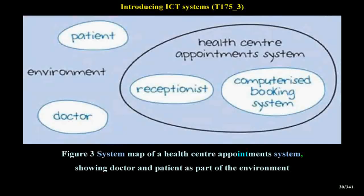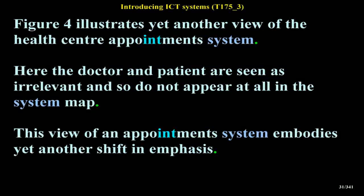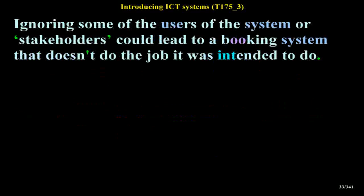Figure 4 illustrates yet another view of the Health Center Appointment System. Here the doctor and patient are seen as irrelevant and so do not appear at all in the system map. This view might be taken by engineers who are concerned with the hardware and software of a computerized system. However, this view is too narrow, and therefore risky, when designing new systems or planning enhancements to existing ones — ignoring some of the users or stakeholders could lead to a booking system that doesn't do the job it was intended to do.